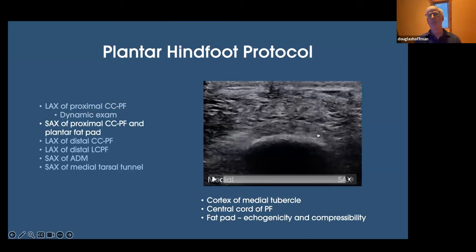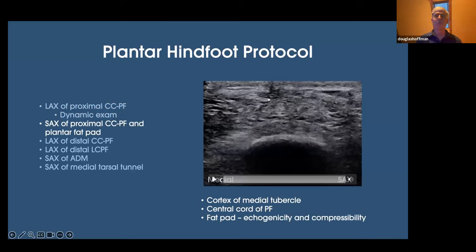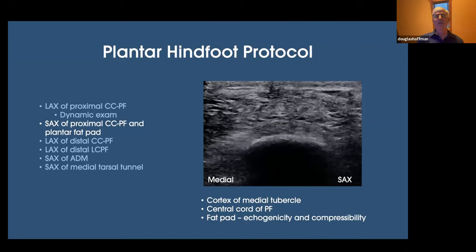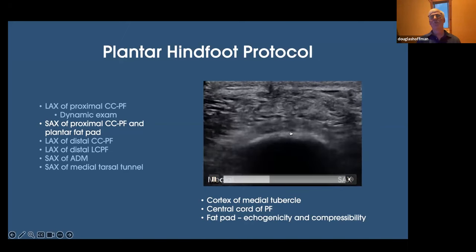This is our short axis image. I use a three-step approach: the cortex looks good, the central cord fibers look good, and then the plantar fat pad. I look for two things in the plantar fat pad: heterogeneity versus homogeneity — we want homogeneity as normal — and I look for fractures or focal areas of hypoechogenicity. I also compress the fat pad and like to see it compressed less than 50%. In this case, it clearly compresses less than 50%.